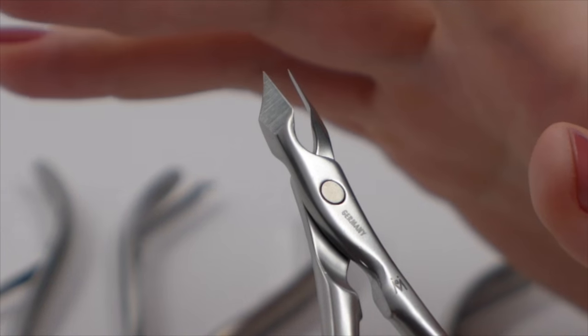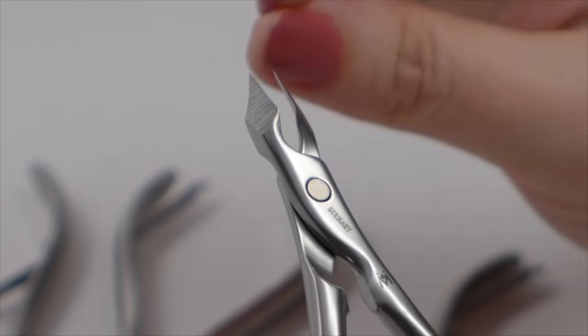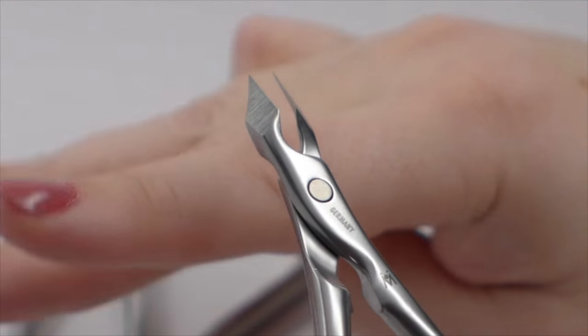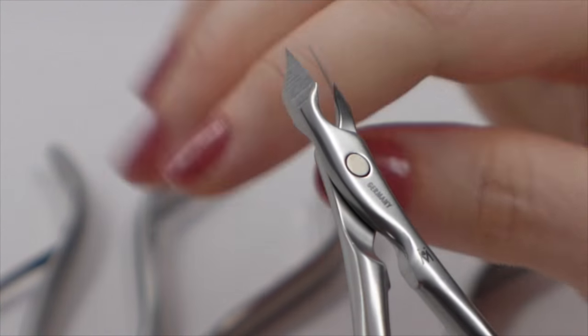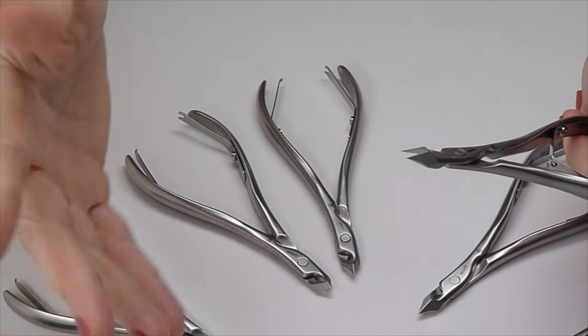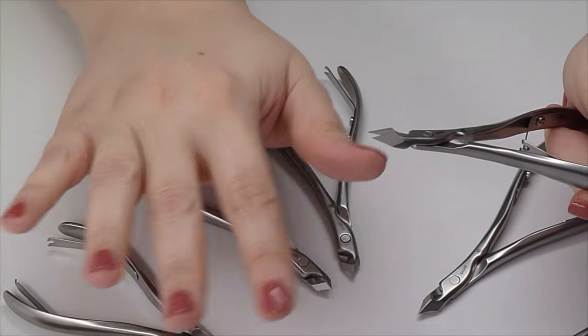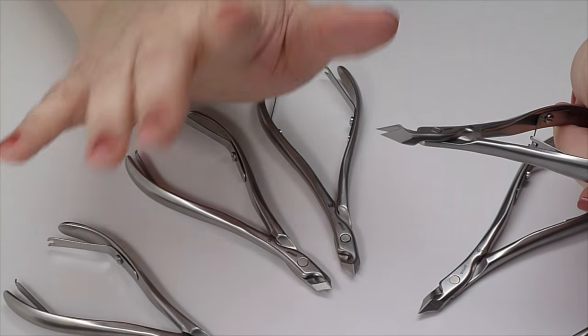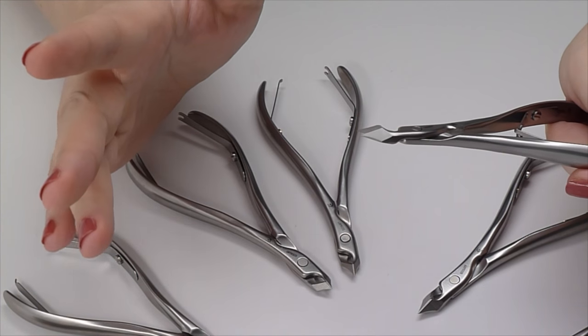Their professional cuticle nippers take cuticle nipping to the next level with three specially shaped jaws in four different lengths, which makes a selection of 12 different tools to choose from. I haven't found any other manufacturer that offers specialized jaw shapes like these.